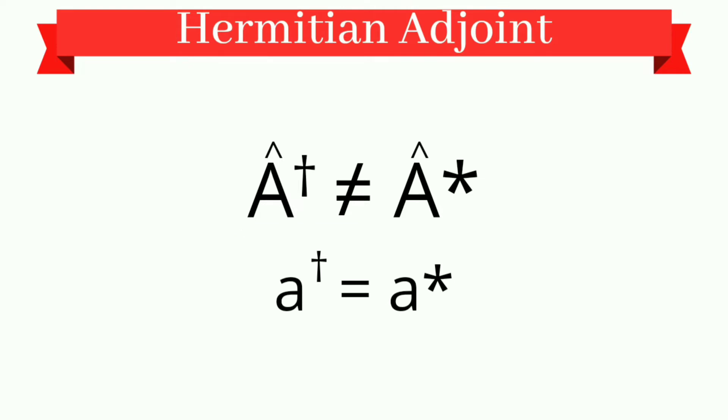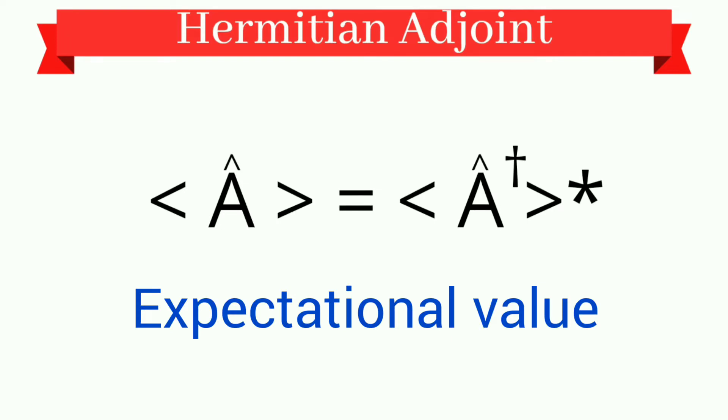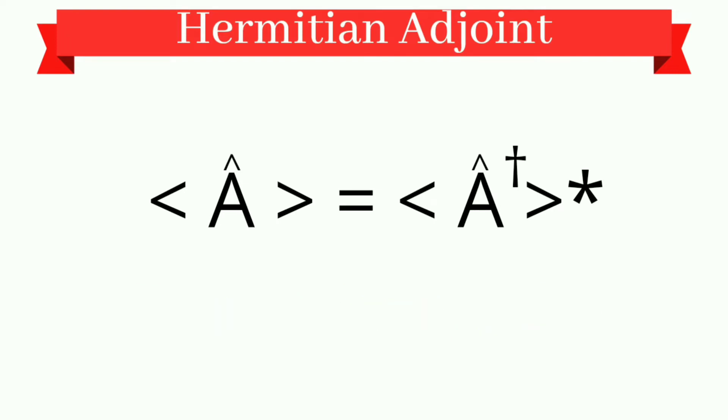So to study the relation between the adjoint and the complex conjugate for operators, we need to take the expectational value of the operator. That is, A operator in angle brackets equals A dagger in angle brackets star. This is how we represent it under the expectational value.